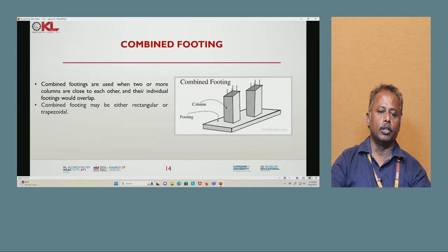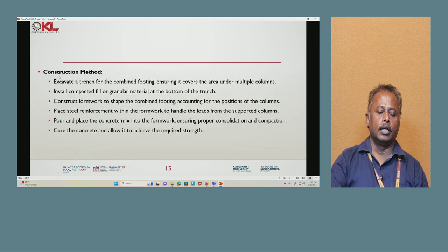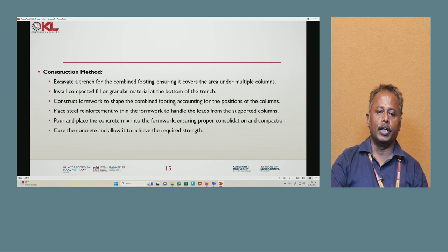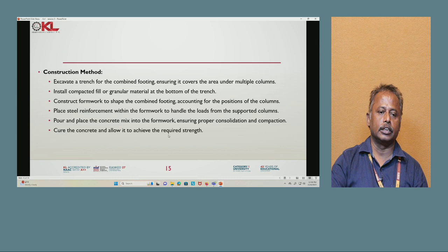Next is combined footing. Combined footing is used when two or more columns are close to each other and their individual footings would overlap. Combined footing may be either rectangular or trapezoidal. Construction method: Excavate a trench covering the area under multiple columns. Install compact fill or granular material at the bottom. Construct formwork to shape the combined footing accounting for column positions. Place steel reinforcement within the formwork. Pour concrete mix ensuring proper consolidation and compaction. Cure the concrete and allow it to achieve the required strength.